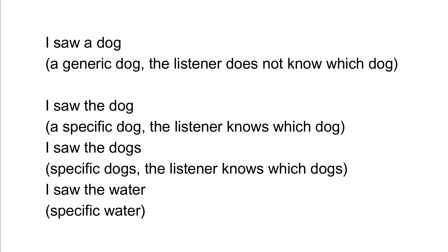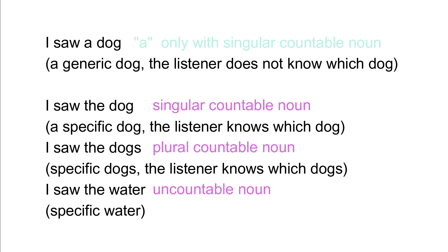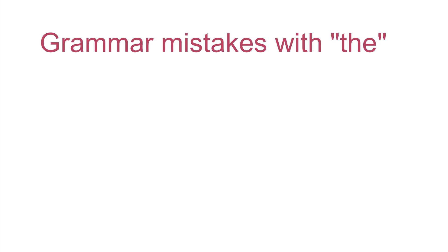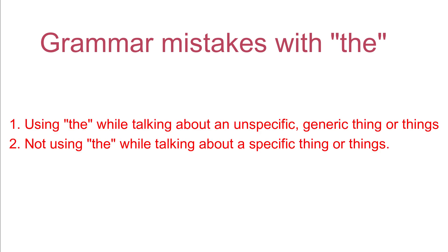For example: 'I saw a dog.' — a generic dog; the listener does not know which dog. 'I saw the dog.' — a specific dog; the listener knows which dog. 'I saw the dogs.' — specific dogs; the listener knows which dogs. 'I saw the water.' — specific water. Grammar mistakes with 'the' happen when we use it while talking about an unspecific, generic thing or things, or when we do not use it while talking about a specific thing or things.